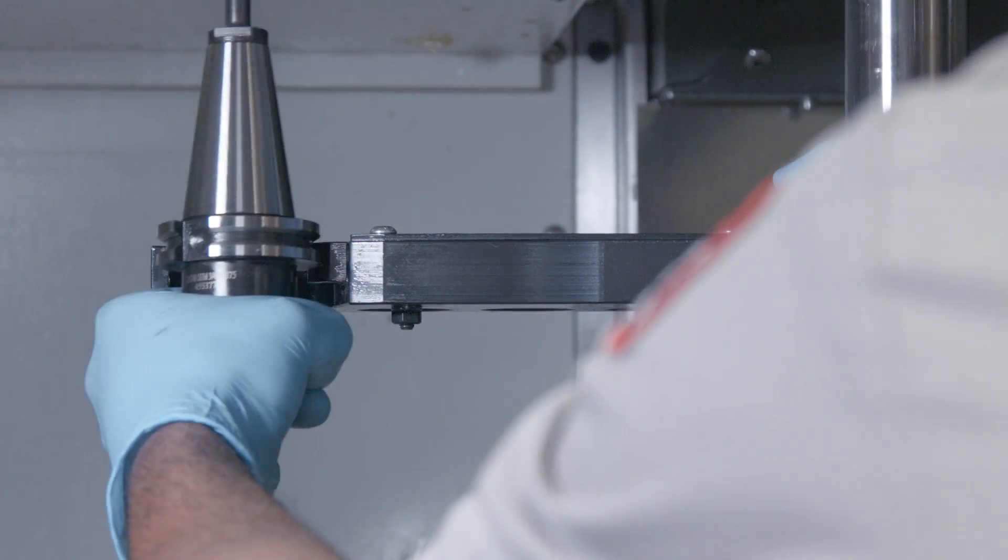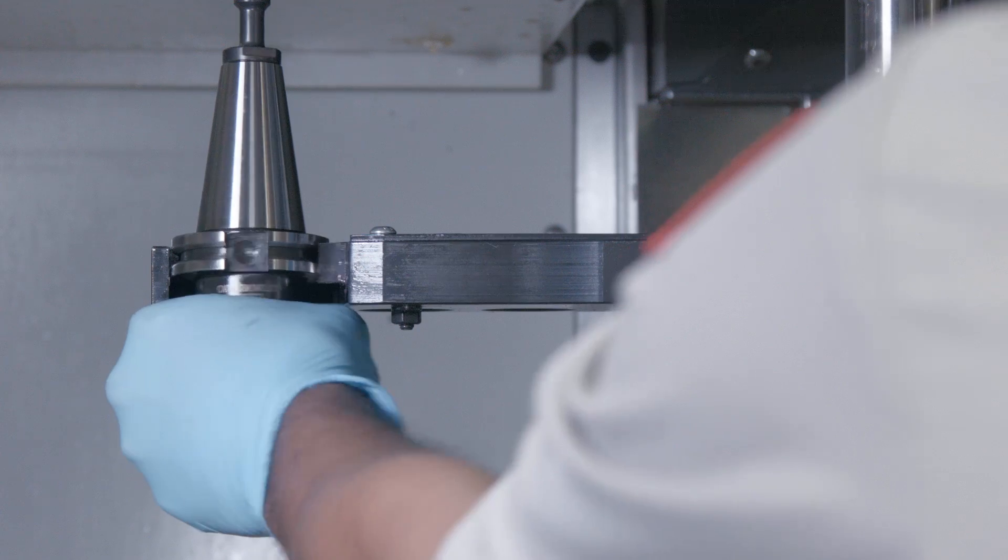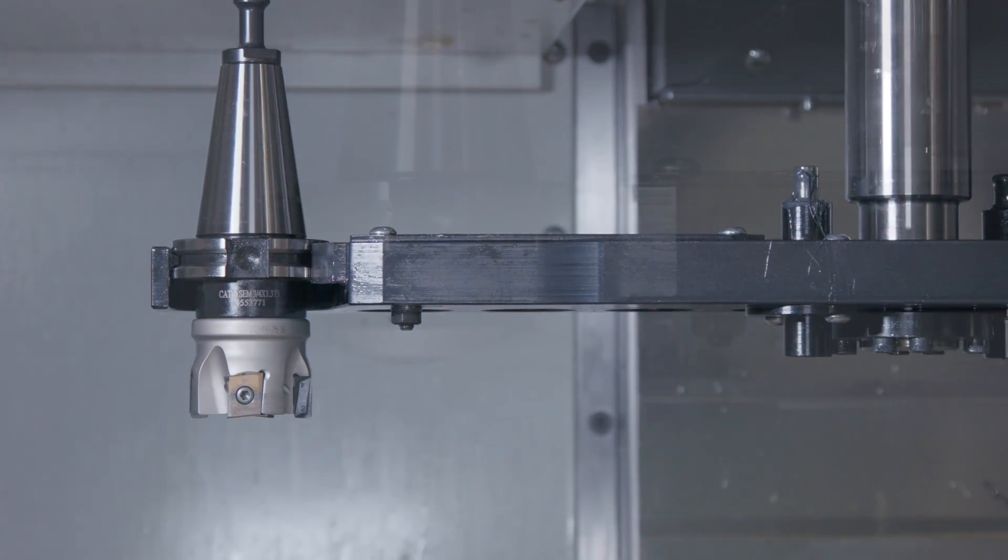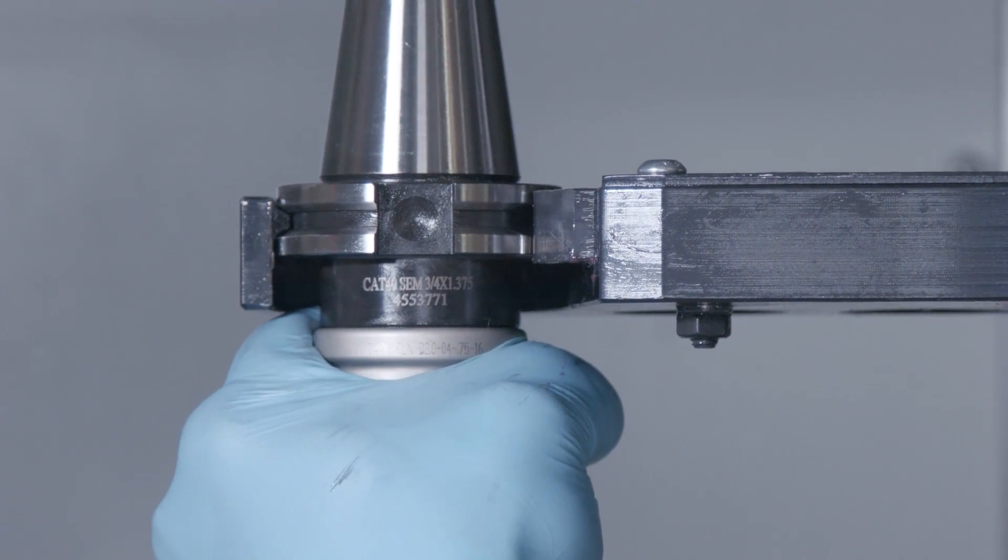Now, you will test the arm with a tool holder. Try to remove the tool holder. The slider should not move and the tool holder should be firmly locked in the arm.